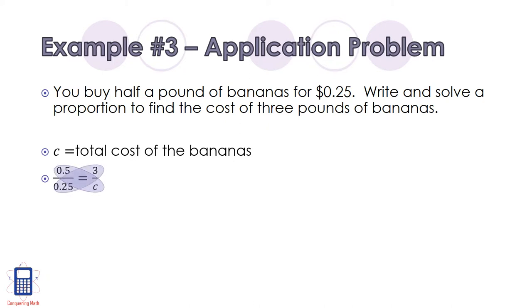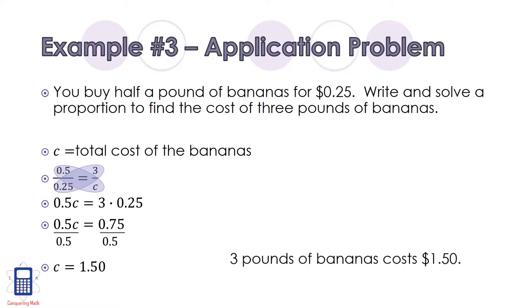We cross multiply, and we find 0.5c equals 3 times 0.25. This simplifies to 0.5c equals 0.75. And then when you divide by 0.5 on both sides, you find that c equals 150. So 3 pounds of bananas costs $1.50.